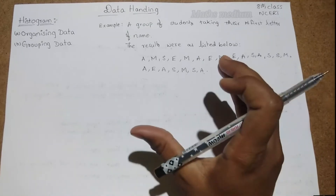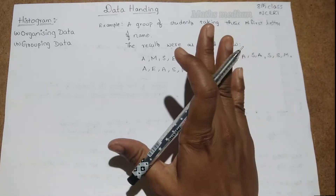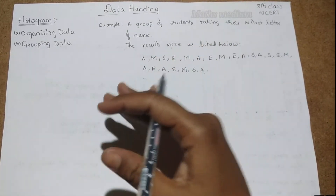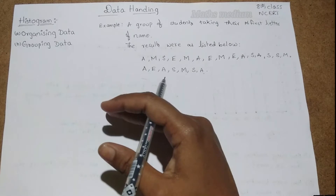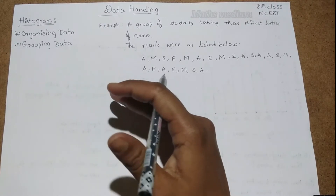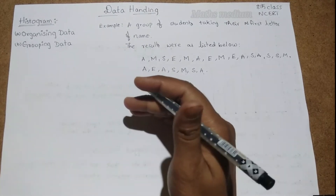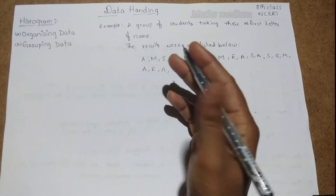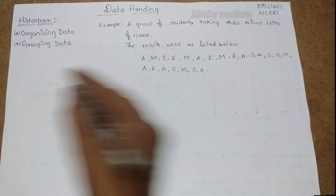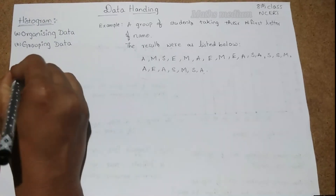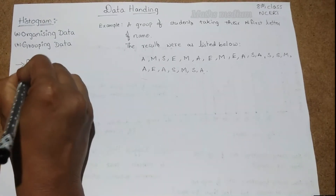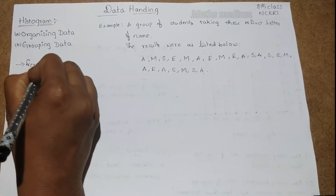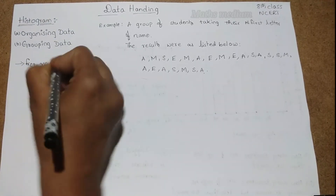Next we have to organize the data. Organizing the data means we have to put it in the form of a table. That table is called a frequency distribution table.